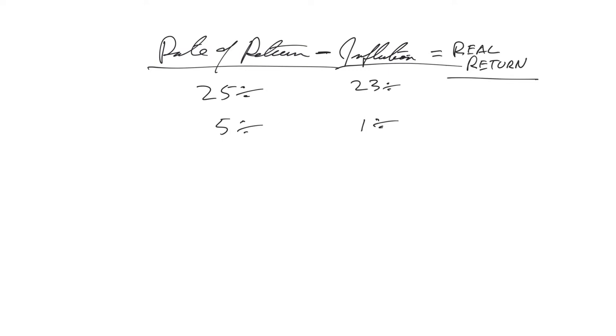Well, what's the real rate of return in the first situation? 25% minus 23, that's a 2% rate of return in terms of purchasing power. So, you invest your money at 25%, and if there's 23% inflation, your purchasing power increased by 2%.